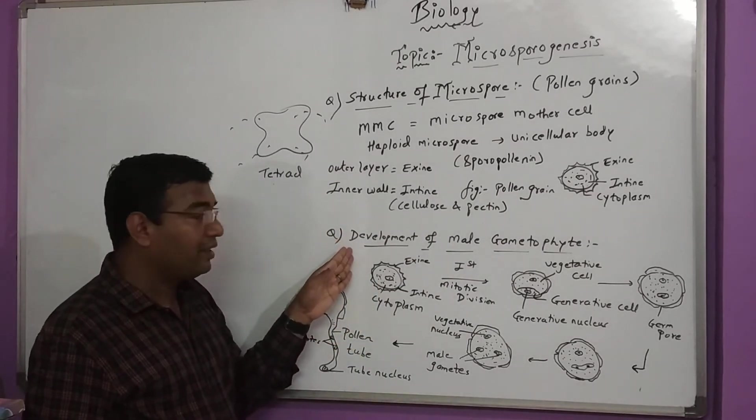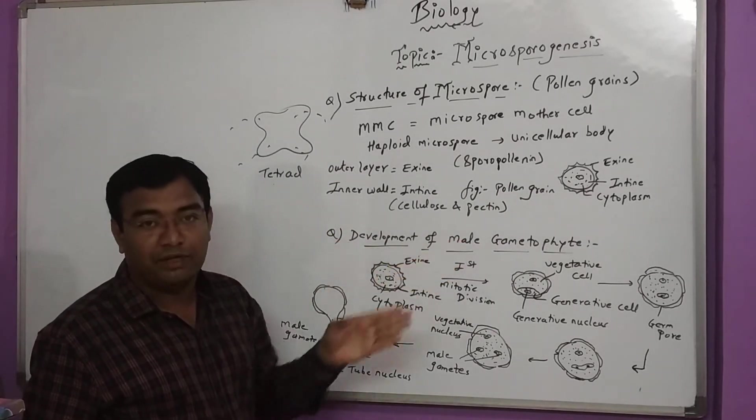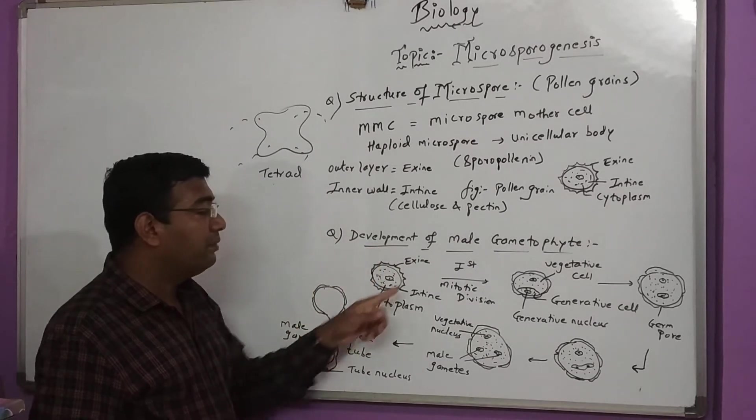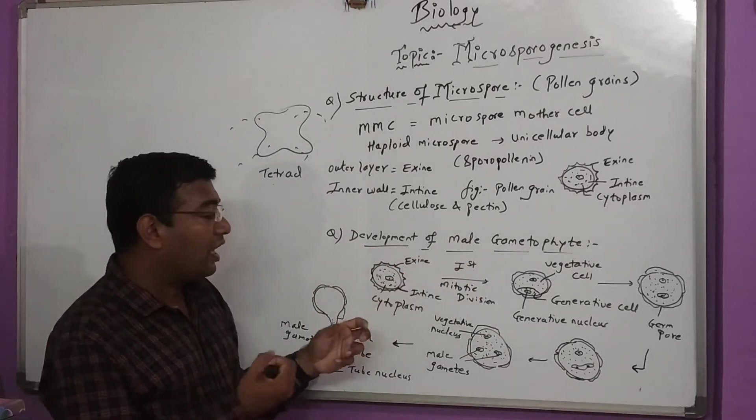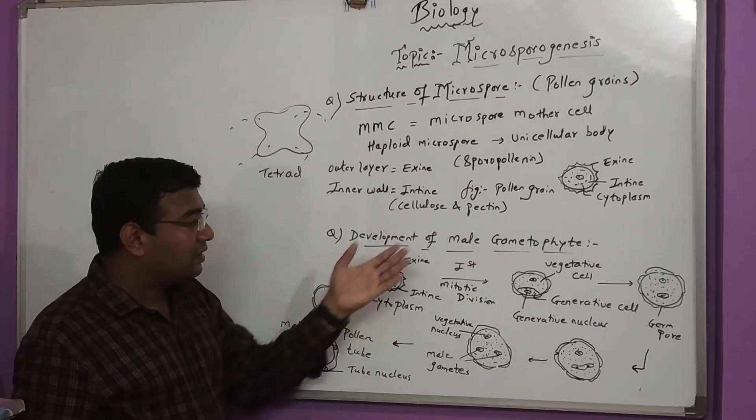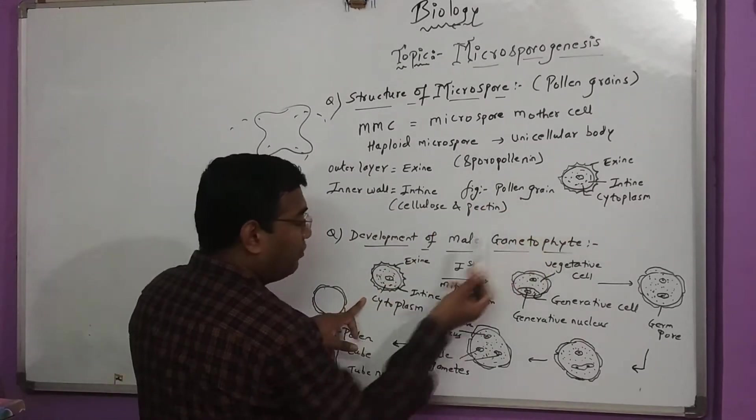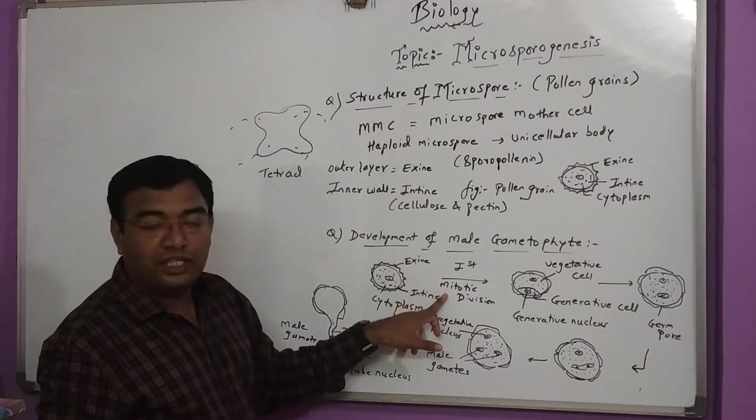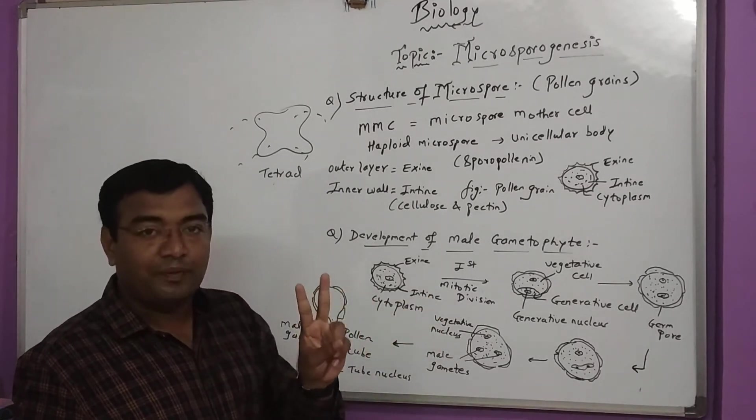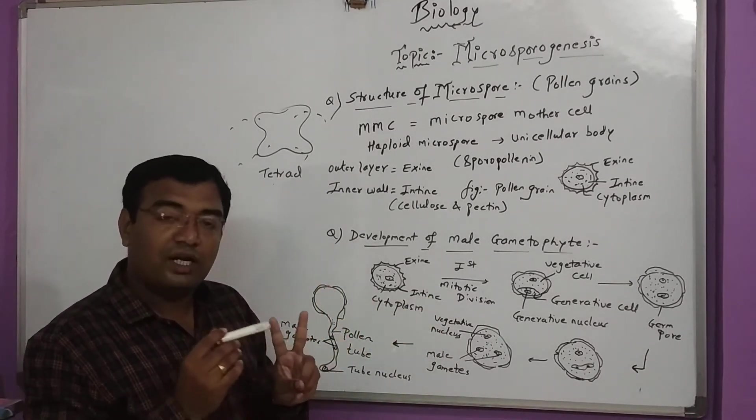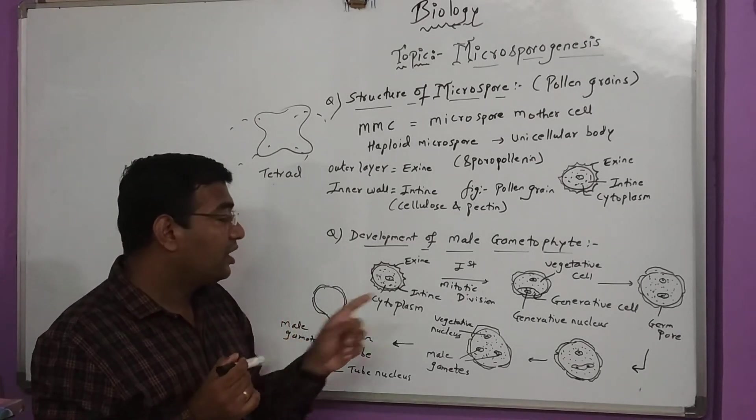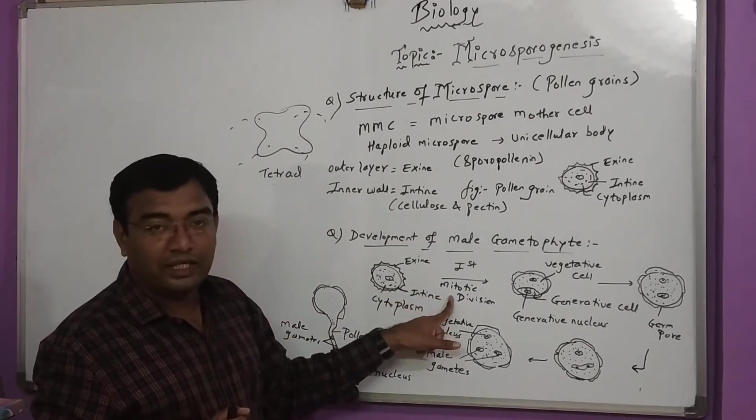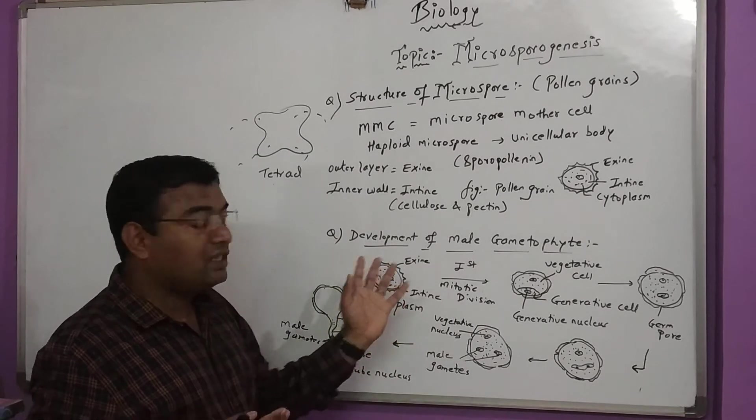Now let's see the development of male gametophyte. How does the male gametophyte develop? You can see the same structure of pollen grain here. Once it starts developing, it undergoes mitotic division. We have seen two types of cell division: meiosis and mitosis. Today we focus on mitotic division, which means it changes morphologically.